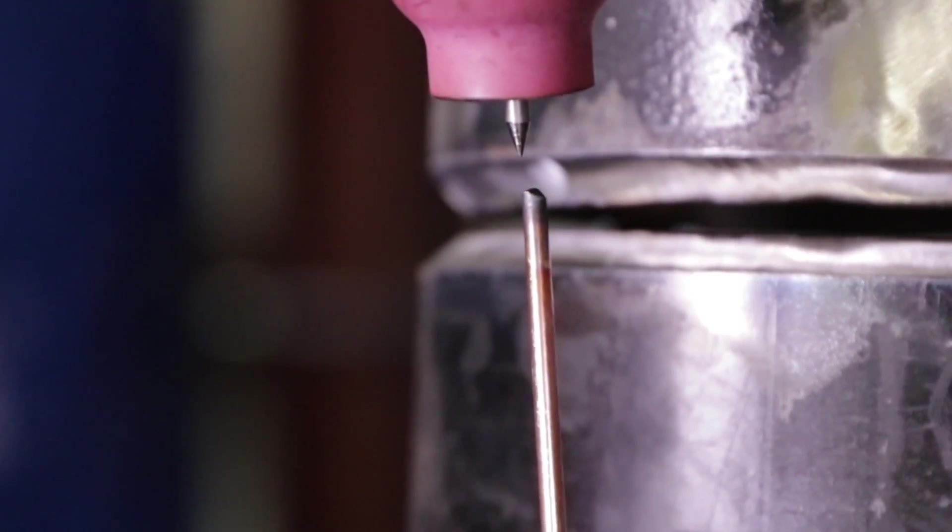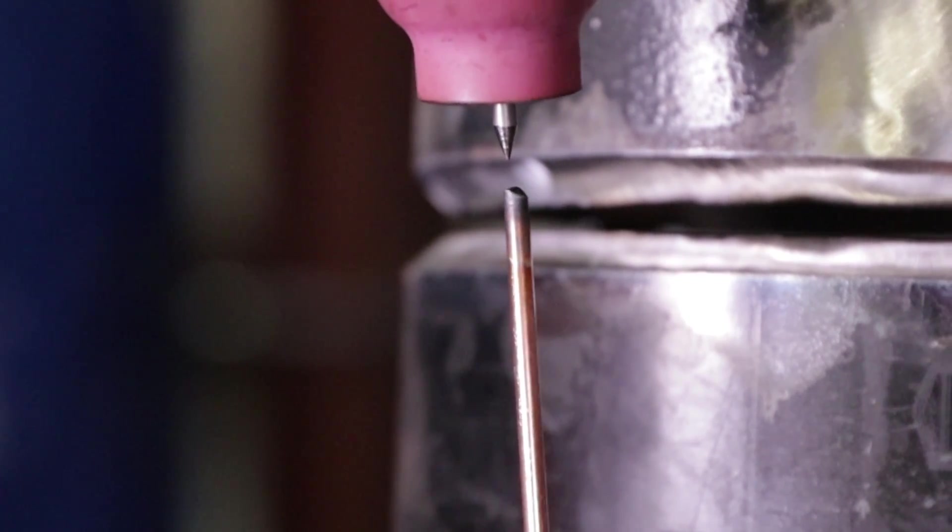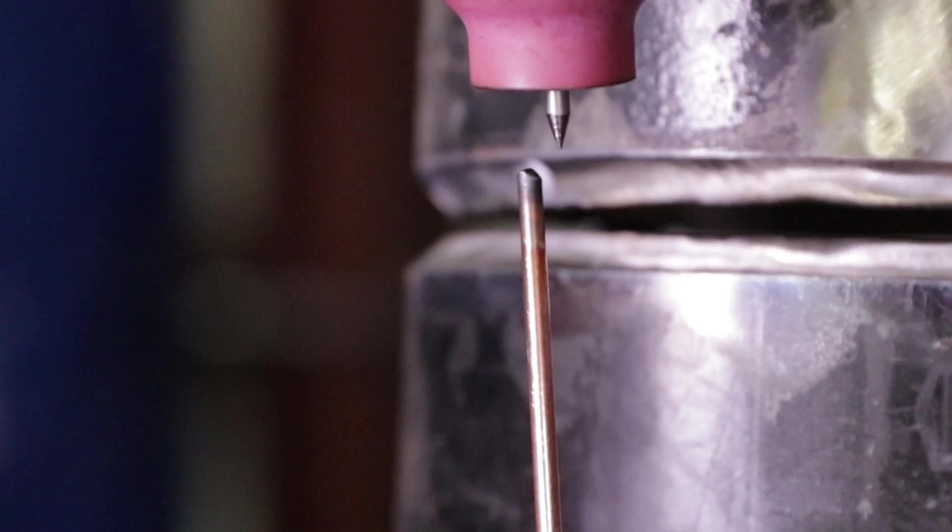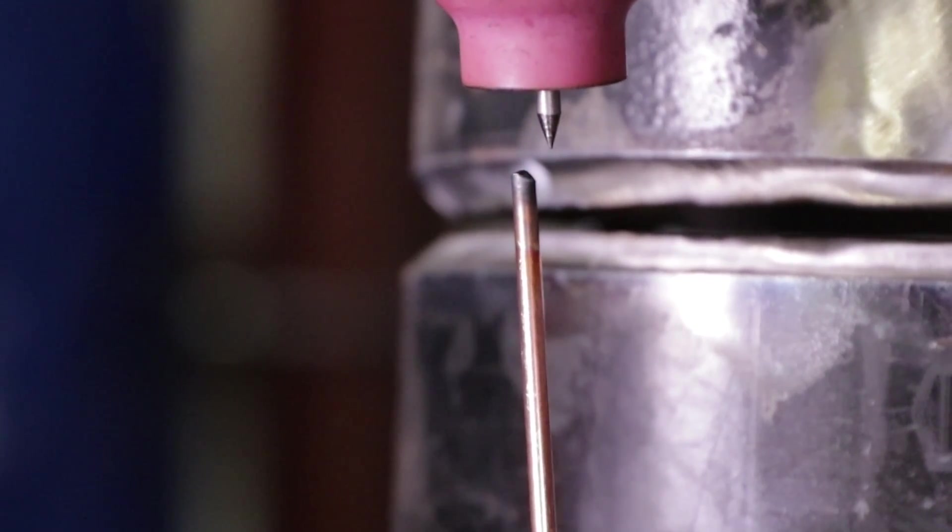That's not how you take a root pass. What you want to do is you want to keep your tungsten behind the rod like that as you take it, like that.